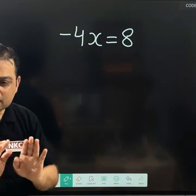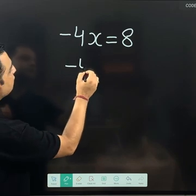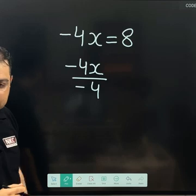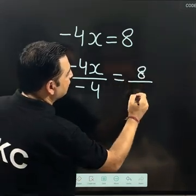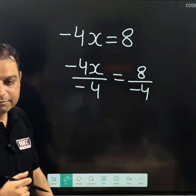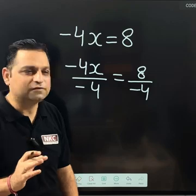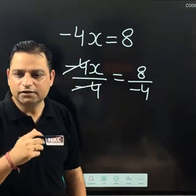So you just divide by -4 on both sides. Dividing by -4 means this -4x is divided by -4, and in the right side 8 is also divided by -4. When both sides we are dividing by -4, so what happens? This -4 and -4 is cancelled.